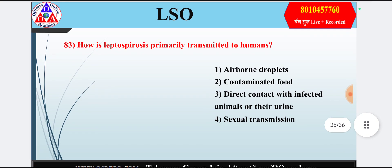Question 23: How is leptospirosis primarily transmitted to humans? Option 1: airborne droplets; option 2: contaminated food; option 3: direct contact with infected animals or their urine; option 4: sexual transmission. Answer is option 3 — direct contact with infected animals or their urine.